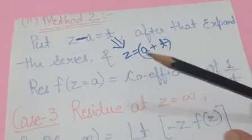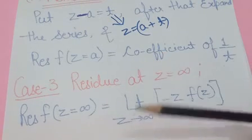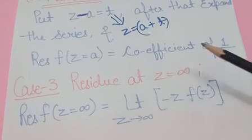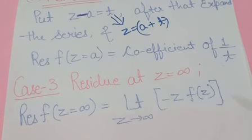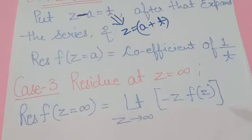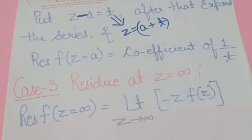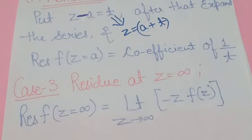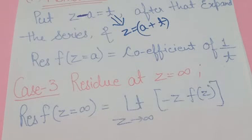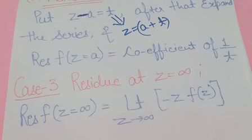Method 3 is to find the residue at z equal to infinity. The formula is: limit as z tends to infinity of [−z · f(z)]. I will try to solve questions related to these formulas in my next videos. Thank you for watching. There will be more videos related to CSIR NET Physical Science exam and other physics exams. Please like, share, subscribe, and feel free to comment suggestions.